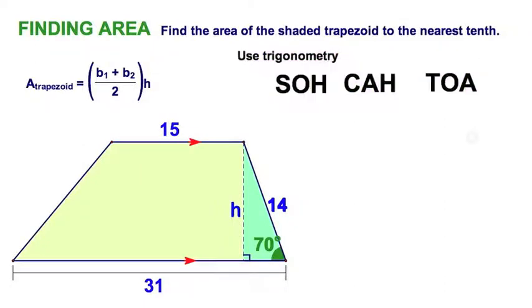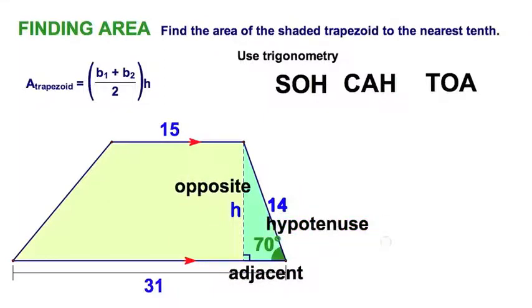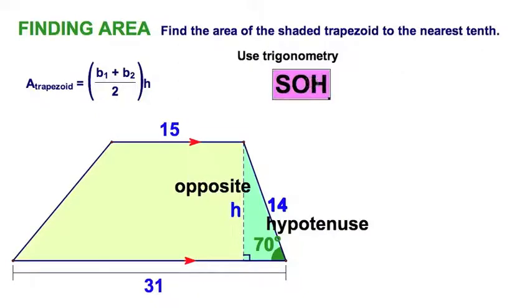I know my SOHCAHTOA, as we were taught, and I'm thinking, with relationship to this 70, the H must be the opposite. The side down here is adjacent, and this is the hypotenuse. Well, I don't really need that adjacent. I need something that relates opposite to hypotenuse. Well, that would be sine, the SOH in SOHCAHTOA. So, we've got that figured out.